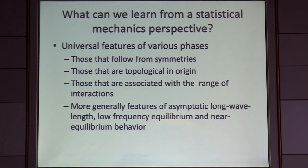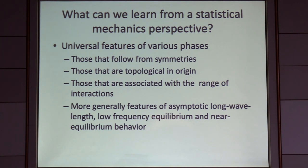More generally, statistical mechanics is the most efficient way to understand the asymptotic long-wavelength, low-energy properties of phases of matter — in particular the equilibrium and near-equilibrium properties. In recent years there's been a big explosion of interest in far-from-equilibrium properties that requires new tools, but statistical mechanics isn't really the right way to look at those things.